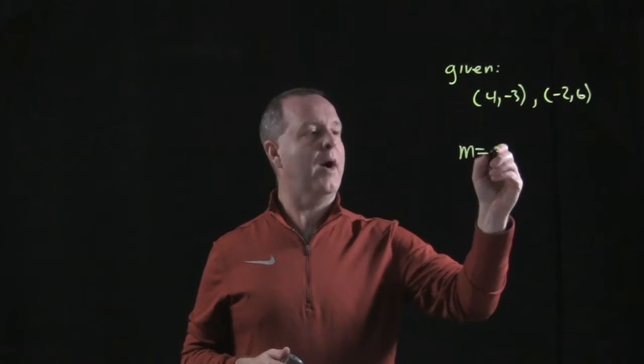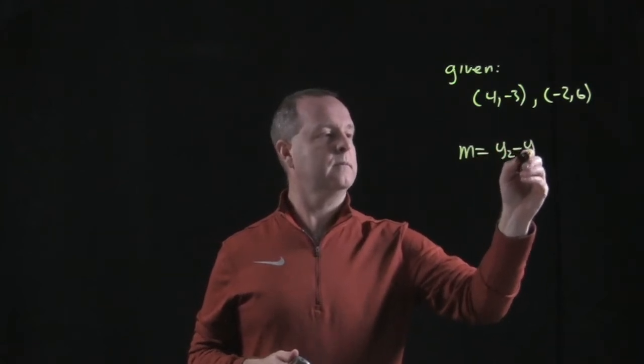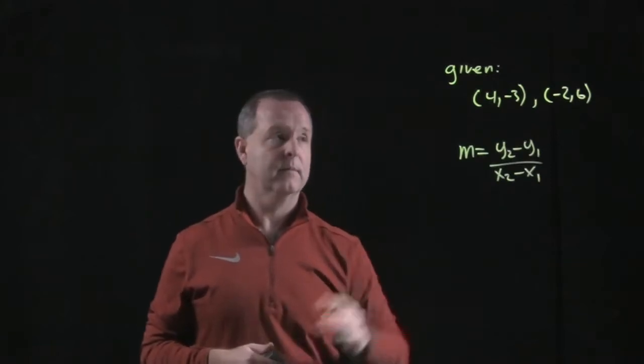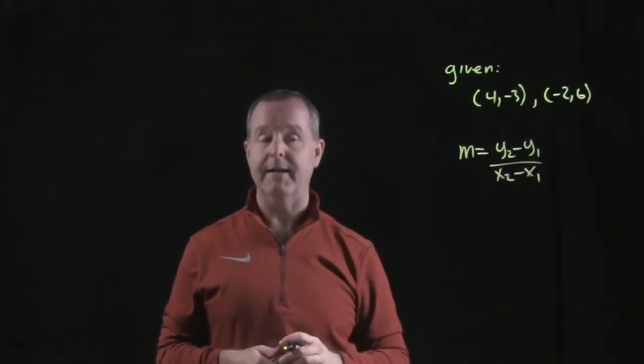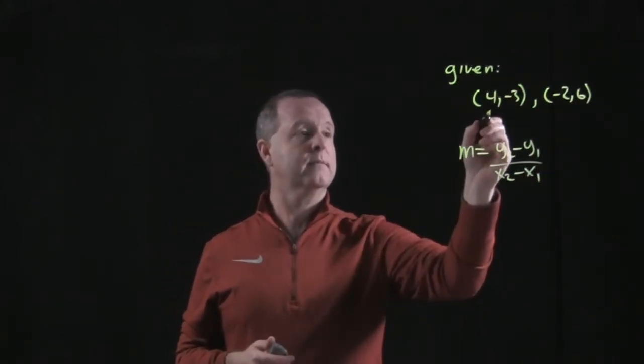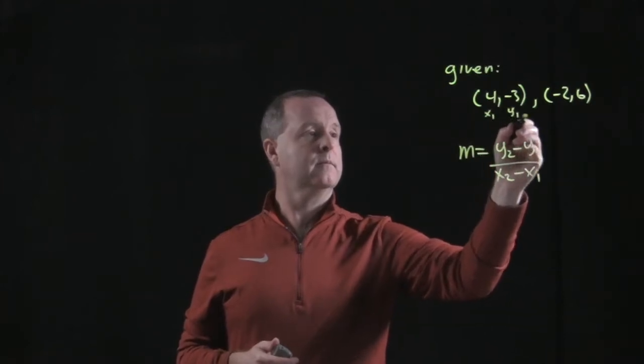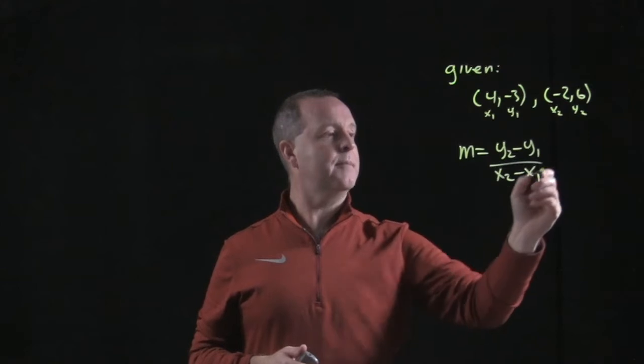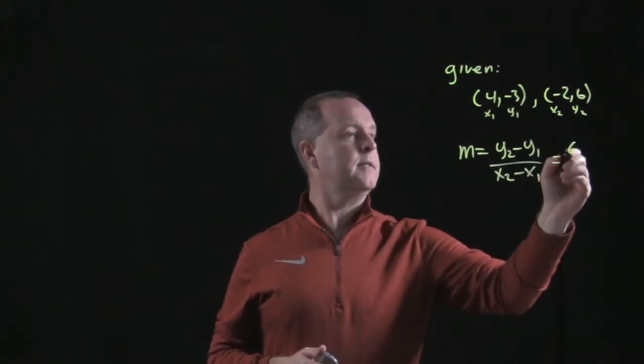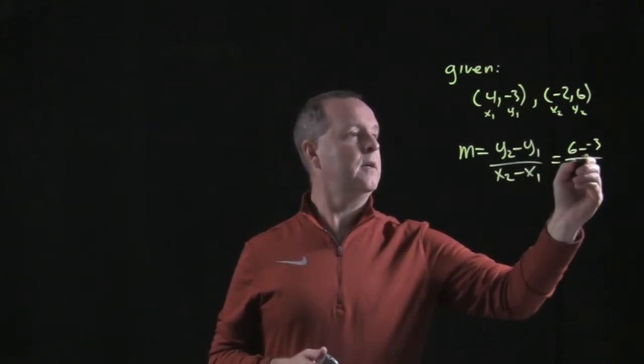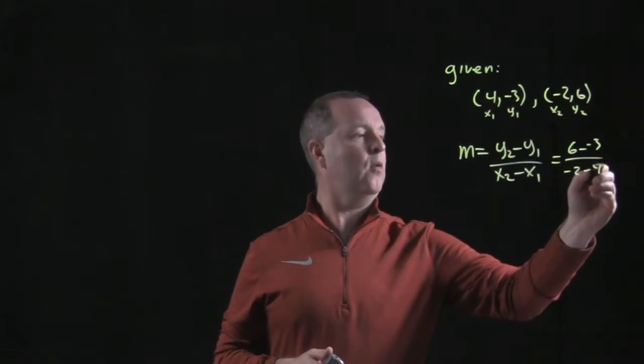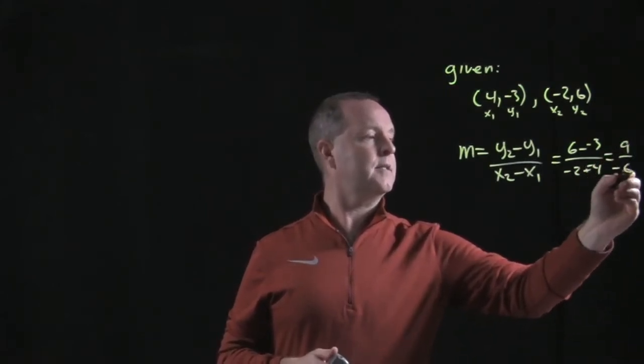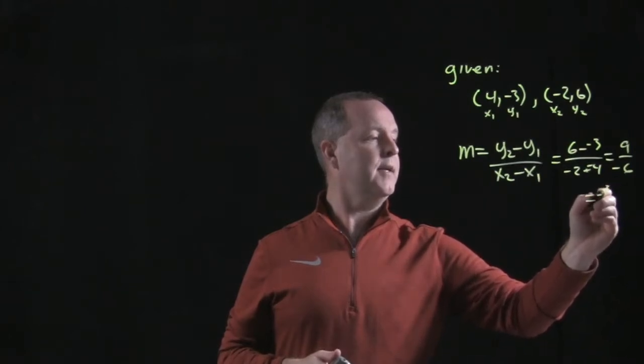So slope equals y2 minus y1 over x2 minus x1. We can designate either pair as our y2's and y1's. So this becomes 6 minus negative 3 over negative 2 minus 4, equals 9 over negative 6, equals negative 3 halves.